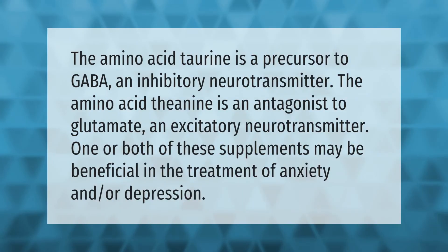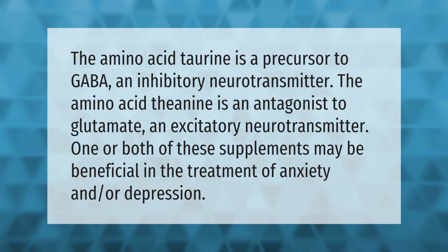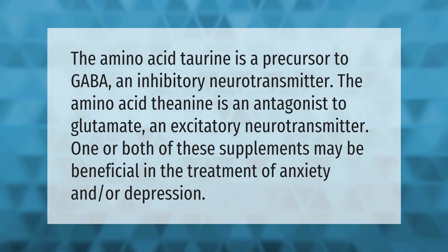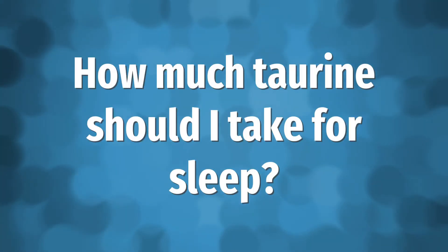The amino acid taurine is a precursor to GABA, an inhibitory neurotransmitter. The amino acid theanine is an antagonist to glutamate, an excitatory neurotransmitter. One or both of these supplements may be beneficial in the treatment of anxiety and/or depression.